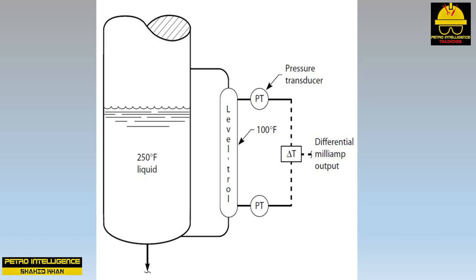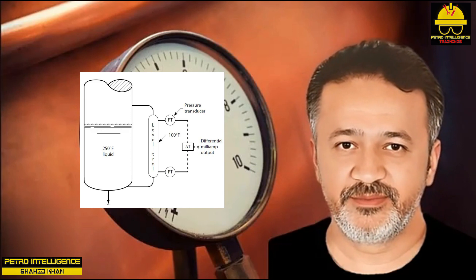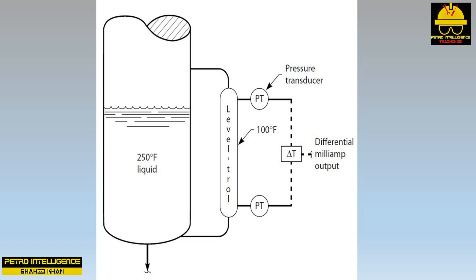The difference between the two pressure transducers is called the milliampere output, which is proportional to the pressure difference between the bottom and top taps. To convert this milliamp signal into a level indication, the instrument technician must assume a specific gravity. The technician should use the specific gravity of the liquid in the process vessel and ignore the specific gravity in the level troll. This can be especially confusing when the operator compares the apparently low liquid level in the gauge glass to the higher indicated level on the control panel.